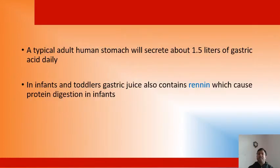A typical adult human stomach secretes 1.5 liters of gastric acid daily. In infants and toddlers, the gastric acid also contains the renin enzyme, which causes protein digestion in infants. This renin enzyme is not present in adults, which is a specific property of the renin enzyme.